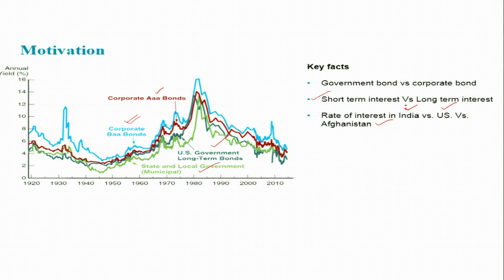What are the reasons for these differences, and why do they fluctuate over time? For example, corporate BAA bonds were nearly 8% in 1920, but around 6% in 2010. What factors explain this kind of fluctuation? That is the main focus of this session and the subsequent few sessions.